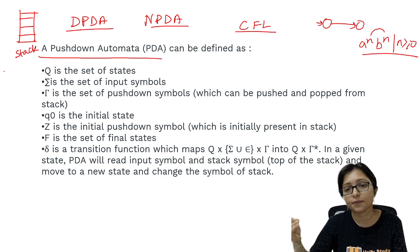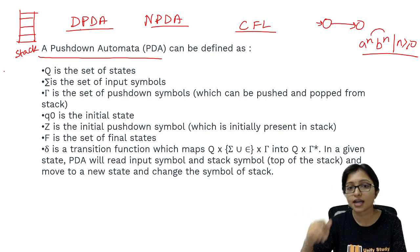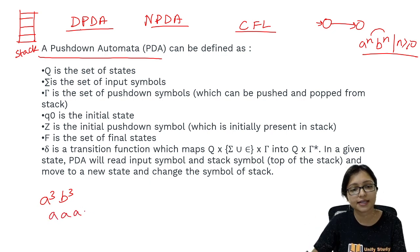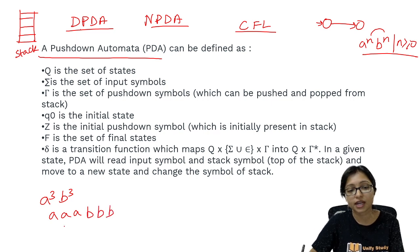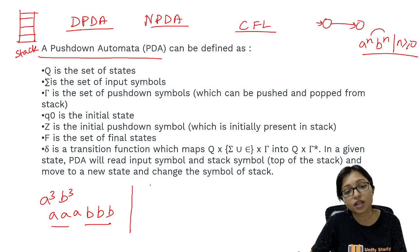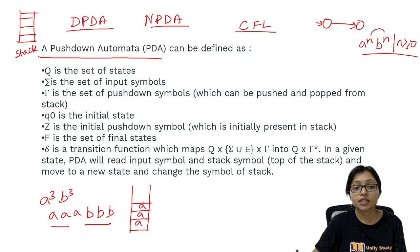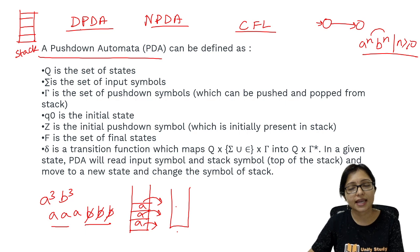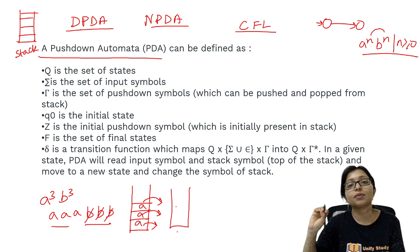Let me show how it works. If I take a to the power 3 and b to the power 3, it works simply: 3 a's are there, after that 3 b's are there — meaning number of a and number of b are equal. So it will push all the a's onto the stack. Then it will pop 1 a and compare with b, again pop 1 a and compare with b, again pop 1 a and compare with b, and ultimately at the end if the stack is empty then we say it is accepted.